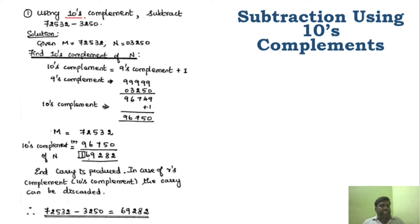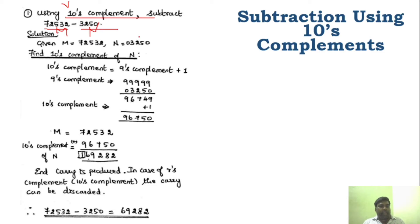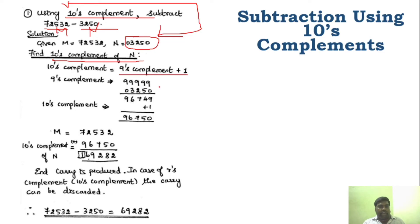Now the question is: using ten's complement, perform the subtraction. This is M and this is N — this is the minuend and this is the subtrahend. What is the first step? The R's complement here is the ten's complement. First, make sure M and N have an equal number of digits — if N has fewer digits, add a leading zero to equalize.